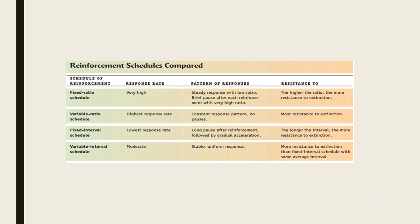A comparison table shows each of the partial schedules of reinforcement in terms of response rate and resistance to extinction. The variable ratio schedule is often the most effective, as it has a high response rate and constant response pattern, and is the most resistant to extinction.